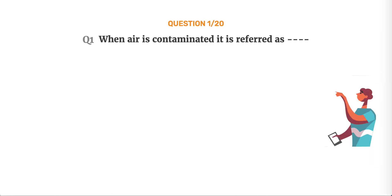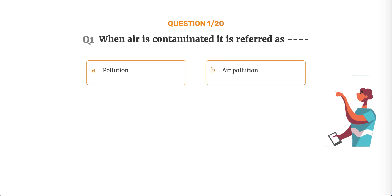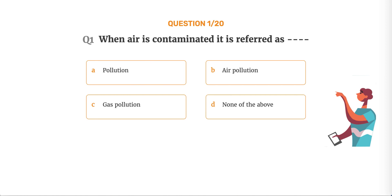Question number 1. When air is contaminated it is referred as: Option A, Pollution. Option B, Air pollution. Option C, Gas pollution. Option D, None of the above.